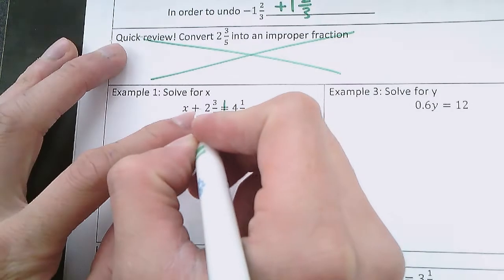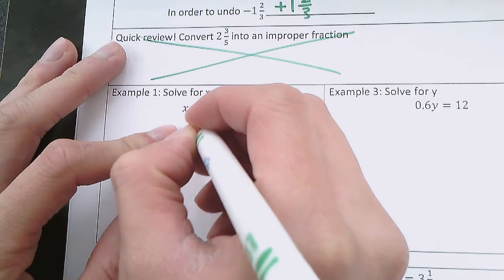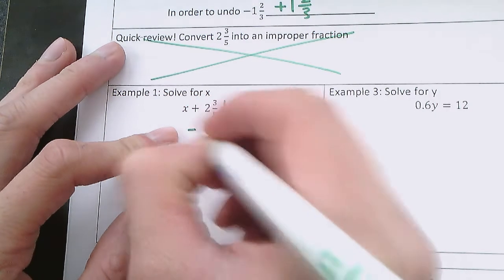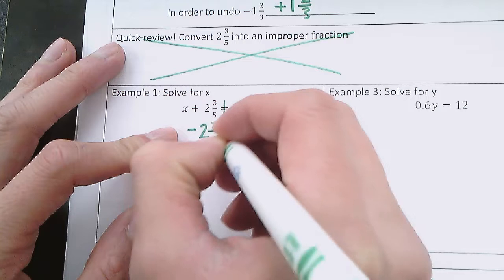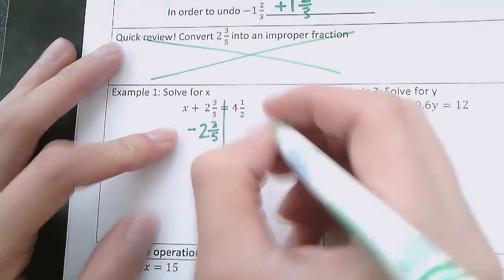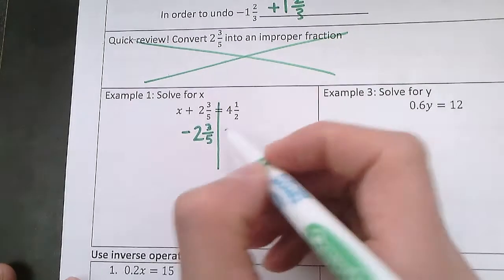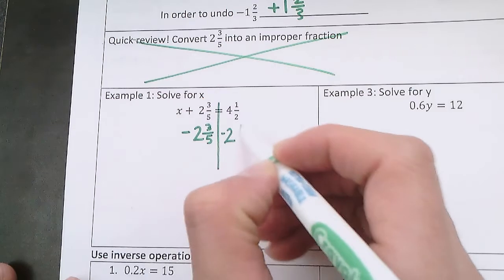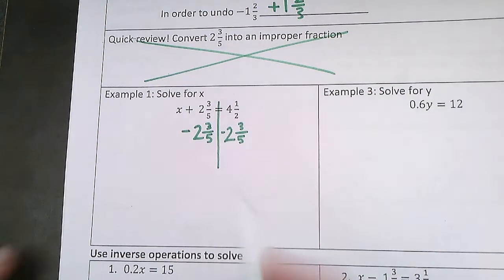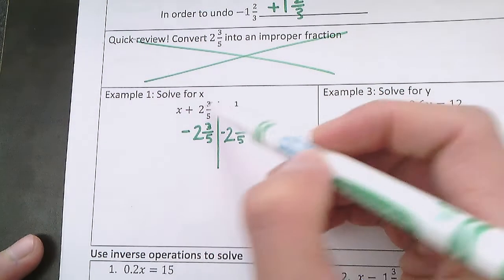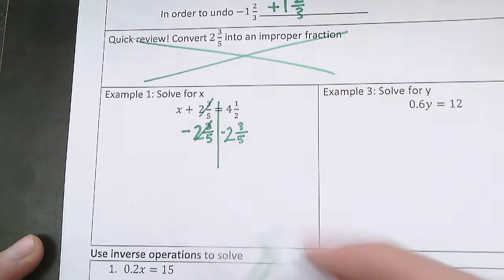To get rid of the adding 2 and 3 fifths, we'd have to do the opposite. So the opposite of adding is subtracting. We'll do 2 and 3 fifths here, and then if we do subtracting 2 and 3 fifths on the left side, we also have to subtract 2 and 3 fifths on the right side.